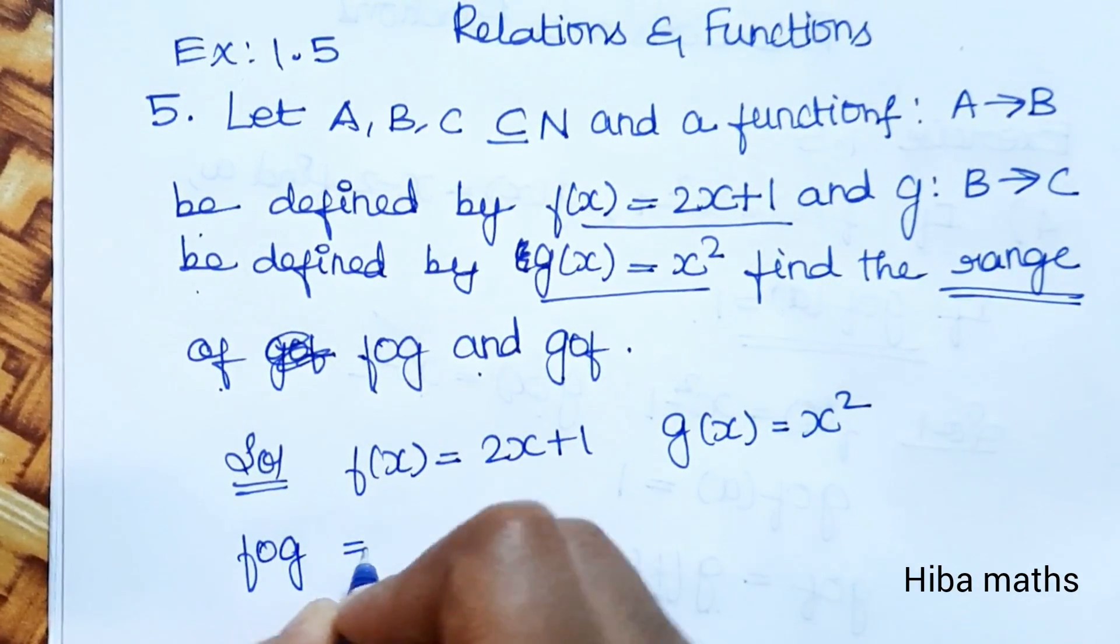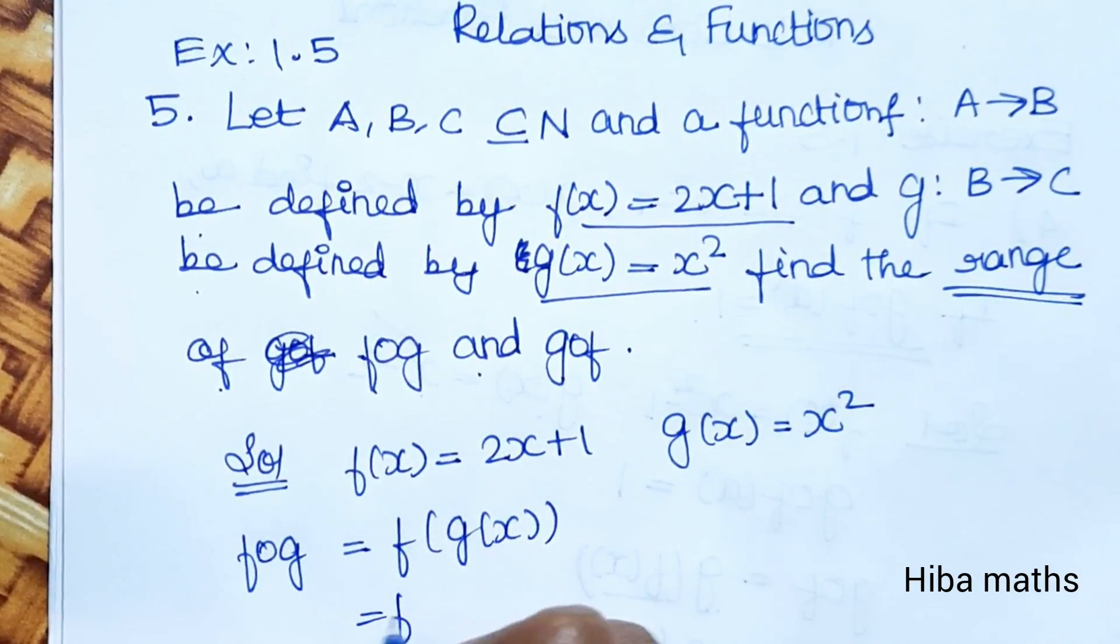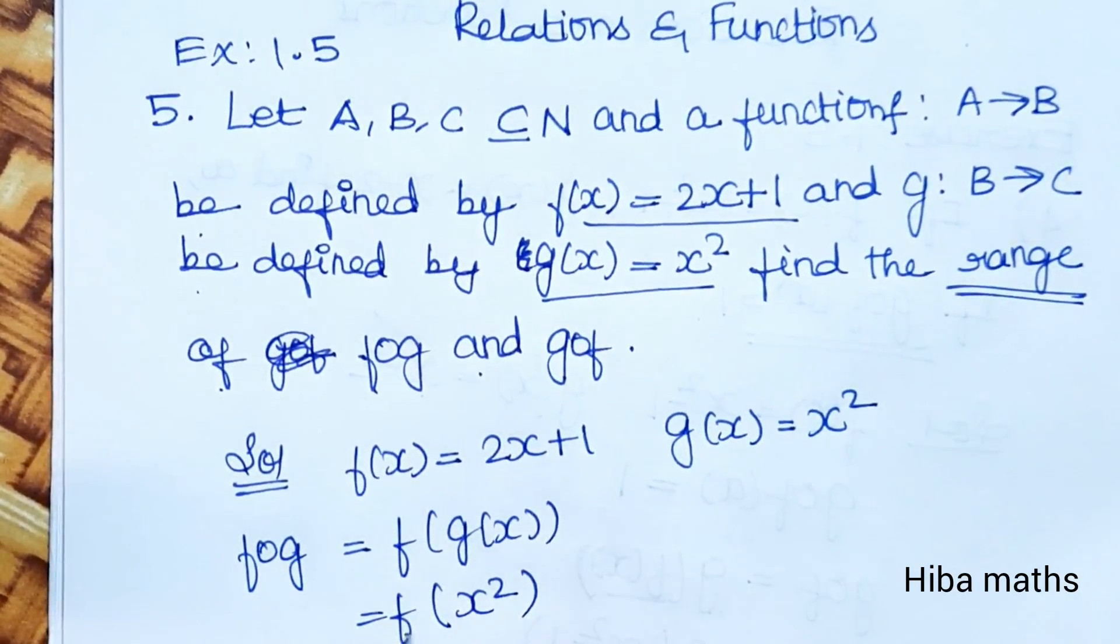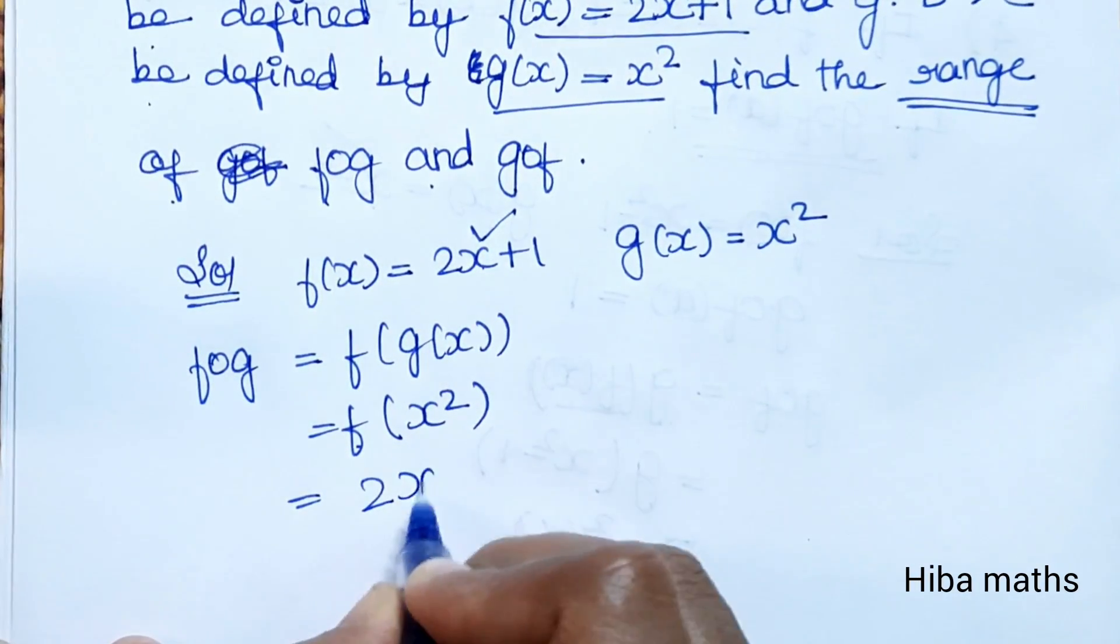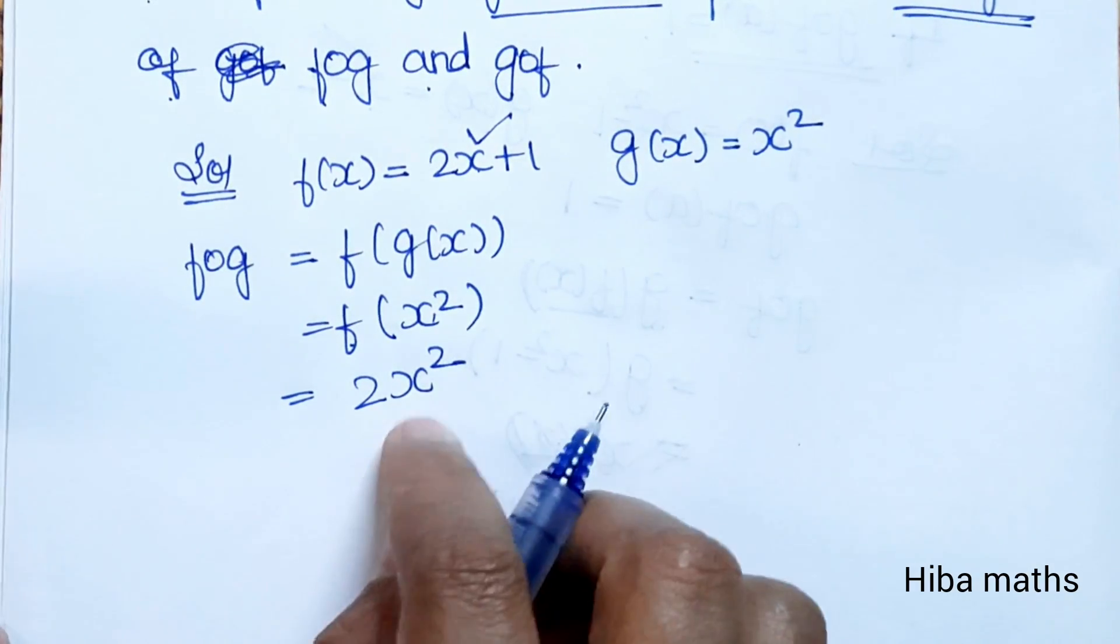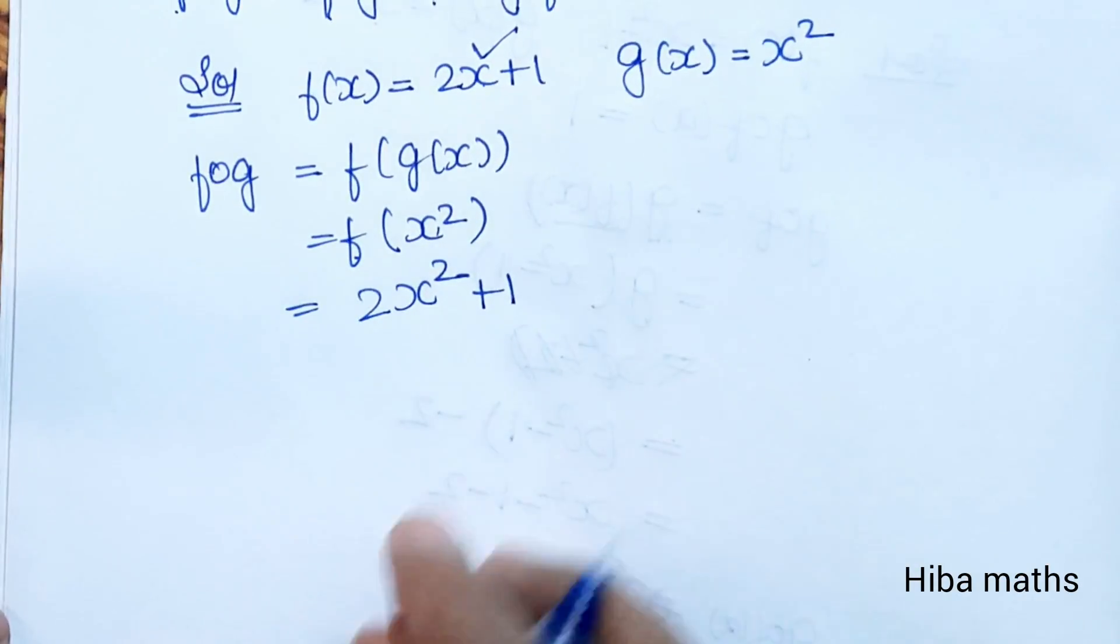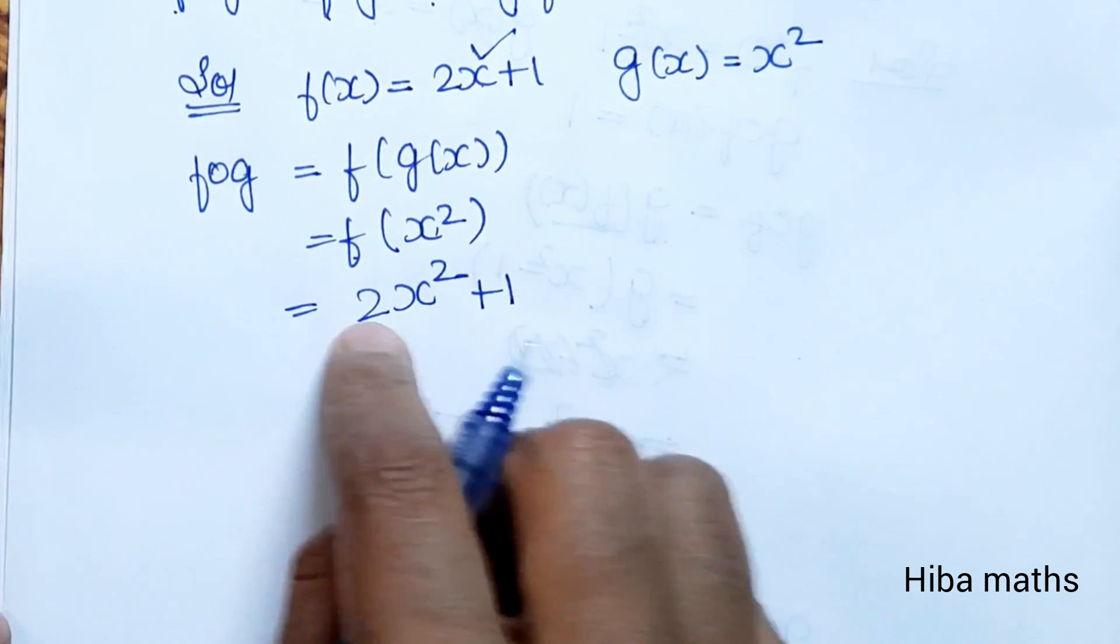First, f∘g = f(g(x)). Inside g(x) the value is x², so f(x²) = 2(x²) + 1 = 2x² + 1.